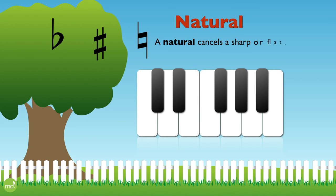Naturals cancel sharps and flats. Here's the D flat, and it's canceled by a D natural. Here's an F sharp, and we cancel it with an F natural.